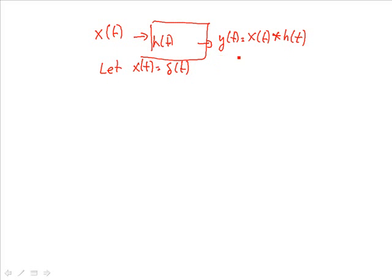Now the convolution integral for a causal system goes from 0 to infinity. Here we've got x(τ), where τ is a dummy variable, times h(t-τ) dτ.